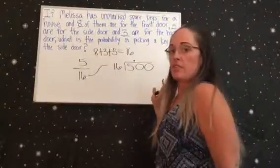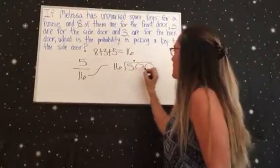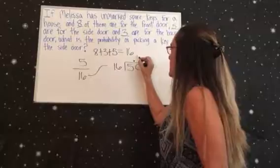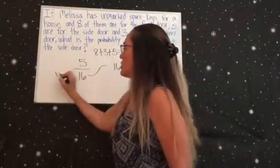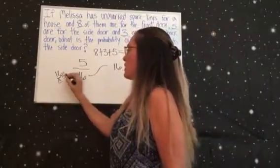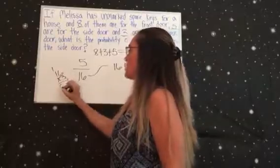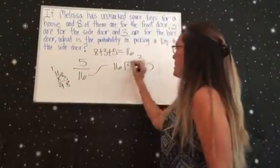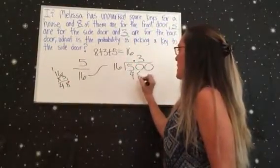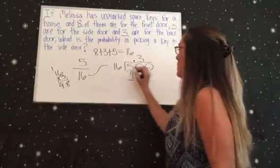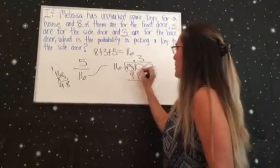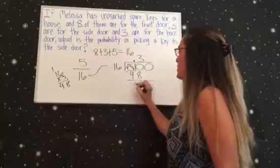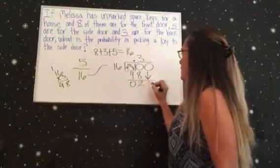Now just look at it as a regular division problem. 16 goes into 50, let's try three times. You can do the multiplication on the side to see if that's correct. 3 times 16 is 48, so now we are going to subtract that. 10 minus 8 is 2. Bring down your other 0.